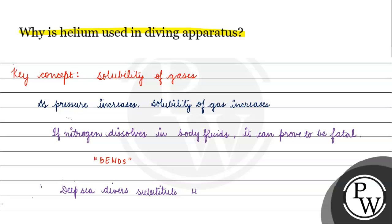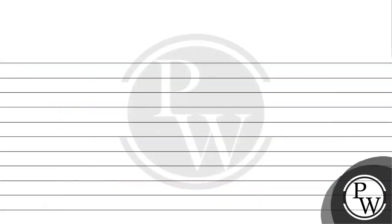So helium is substituted for nitrogen. Why substitute helium? Because helium's solubility, as compared to other gases, is much less in body fluids. That's why helium is added in the diving apparatus — so it will not dissolve in our body fluids.